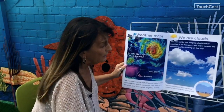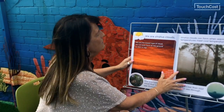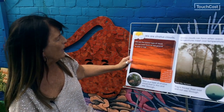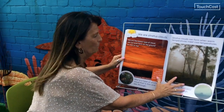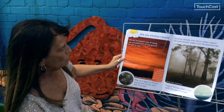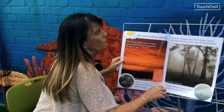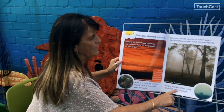Heat waves happen when we have extremely hot weather for a very long time. This is a picture of the Sahara Desert in Africa. We are stratus clouds — we are the lowest type of cloud and can even form on the ground as mist or fog. Mist is a type of stratus cloud that is thin and see-through. Stratus clouds can form when warm temperatures meet cool temperatures. Fog is thicker than mist and not see-through at all.